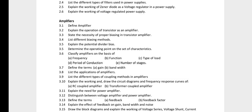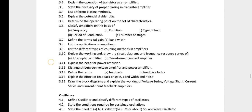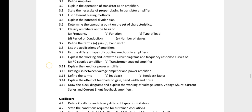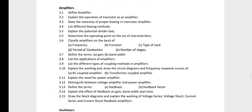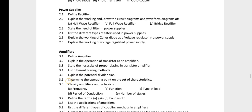Question 3.4 asks to list different biasing methods. Question 3.7 asks to define the terms gain and bandwidth. These are short answer questions. Define amplifier and applications of amplifier — these are three short answer questions for Chapter 3.